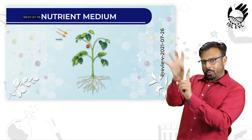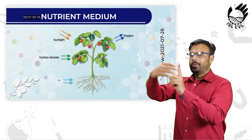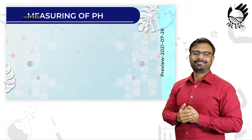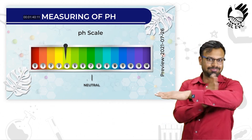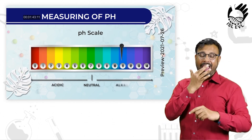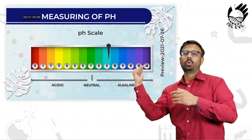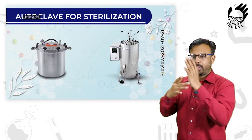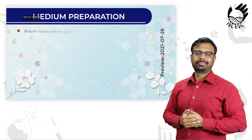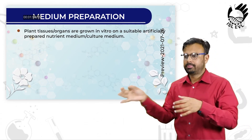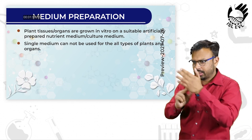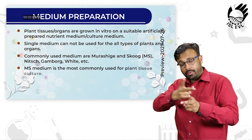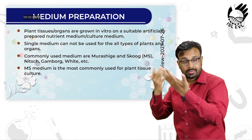Nutrient medium: measuring of pH is carried out, and the medium is autoclaved for sterilization. Plant tissues and organs are grown in vitro on a suitable artificially prepared nutrient medium. A single medium cannot be used for all types of plants and organs. Commonly used media are Murashige and Skoog (MS), Gamborg, White, and others.